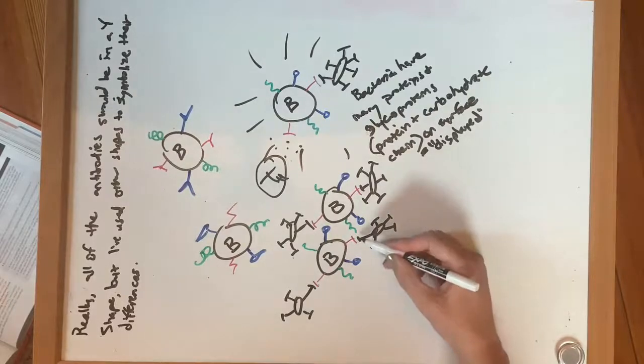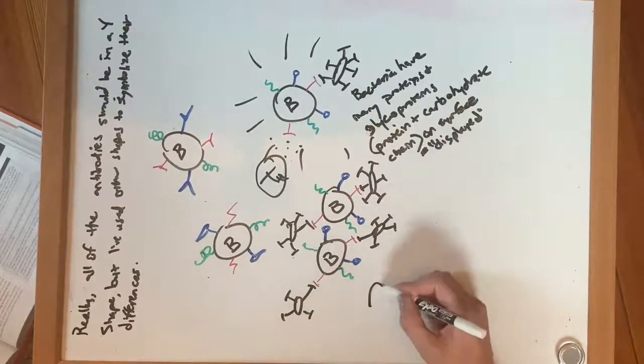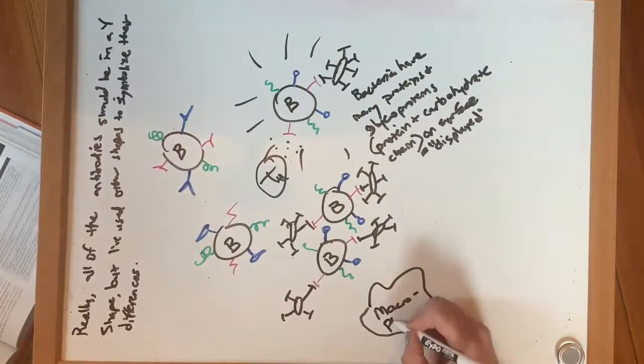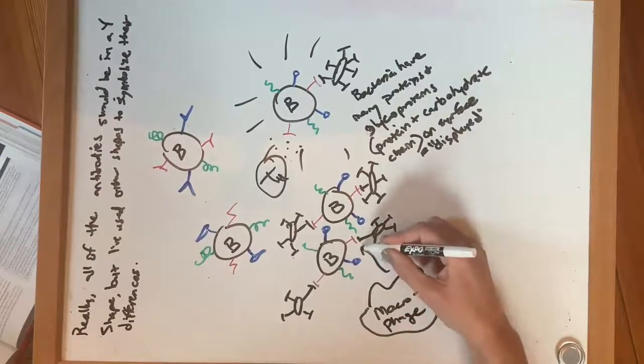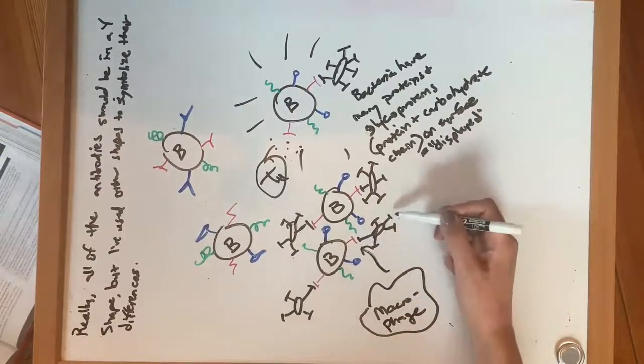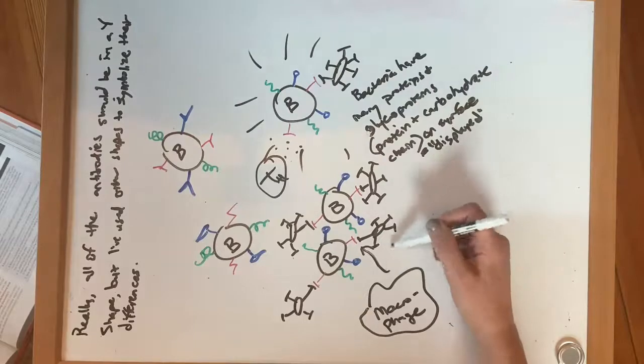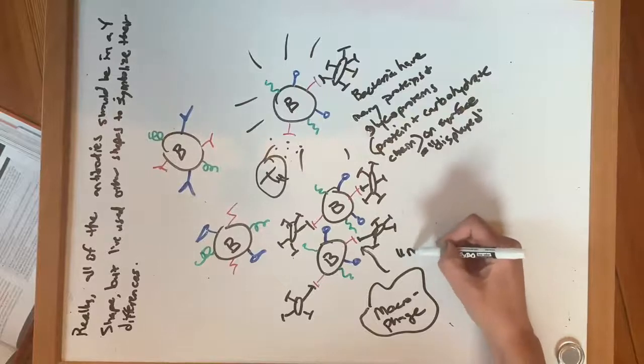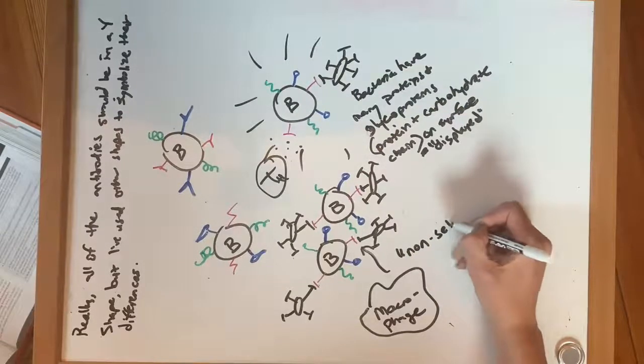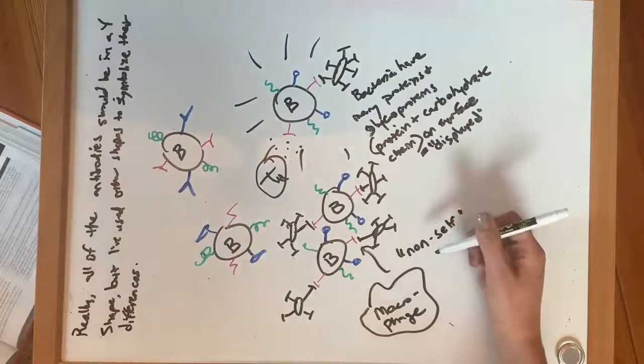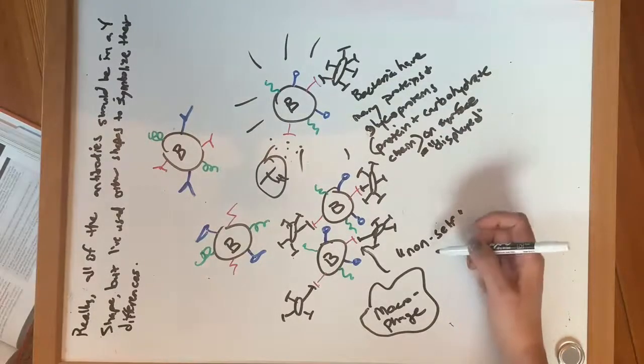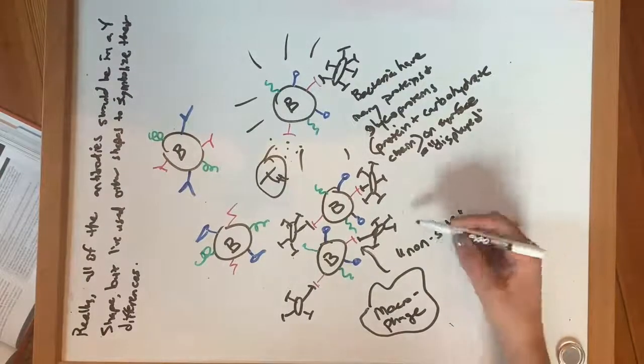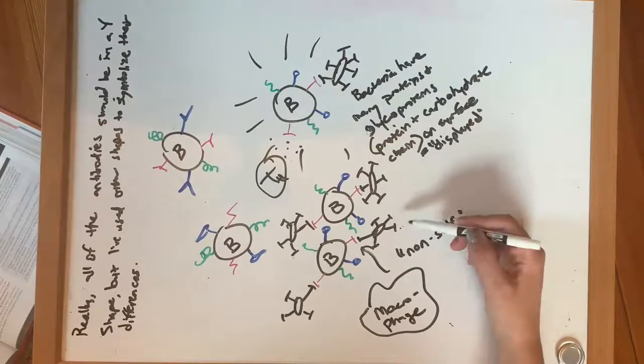And so this is going to signal to macrophages. It's going to see that this is bound, and it's going to see that this pathogen or this structure is a non-self cell, which just means that it does not display specific proteins which all of the cells in the body should have. And so it's going to engulf this and destroy it.